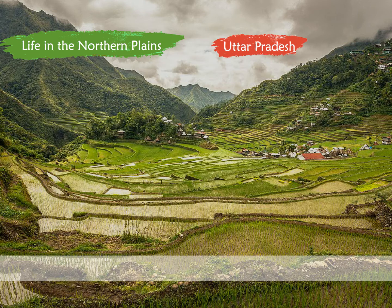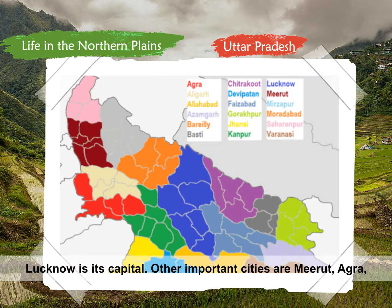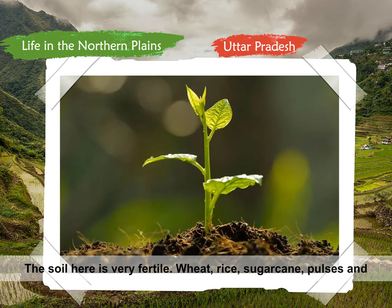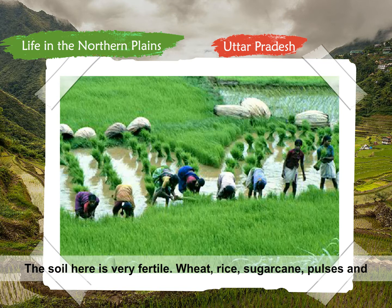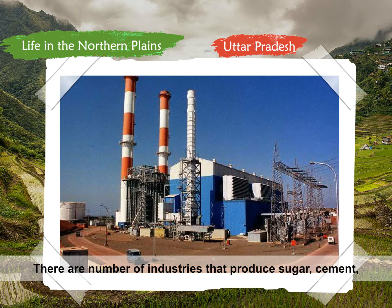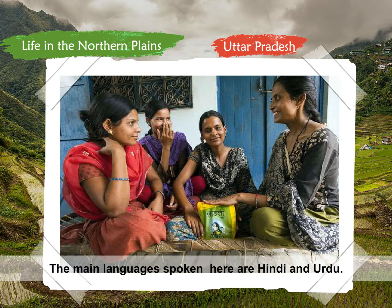Uttar Pradesh is the most populous state of India. Lucknow is its capital. Other important cities are Agra, Kanpur, Allahabad, and Varanasi. The soil here is very fertile. Wheat, rice, sugarcane, pulses, and oilseeds are the main crops. There are a number of industries that produce sugar, cement, textile, leather goods, etc. The main languages spoken here are Hindi and Urdu.